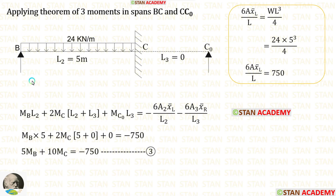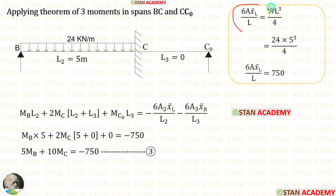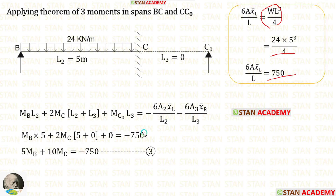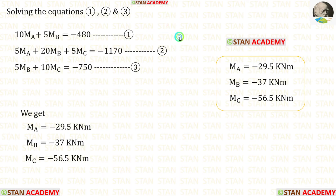Now let us take spans BC and CC0. We already saw the formula for 6A·x̄left/L. Applying the values we are getting 750. Let us apply 750 in this equation — finally, we are making the third equation very easily. We have made three equations. Now we can use the calculator and solve these three equations to get the final moments.